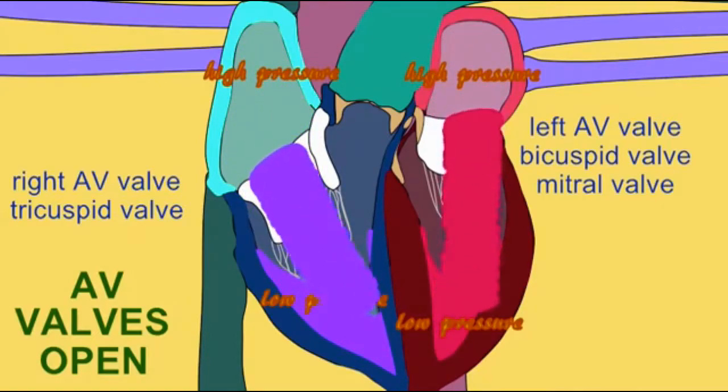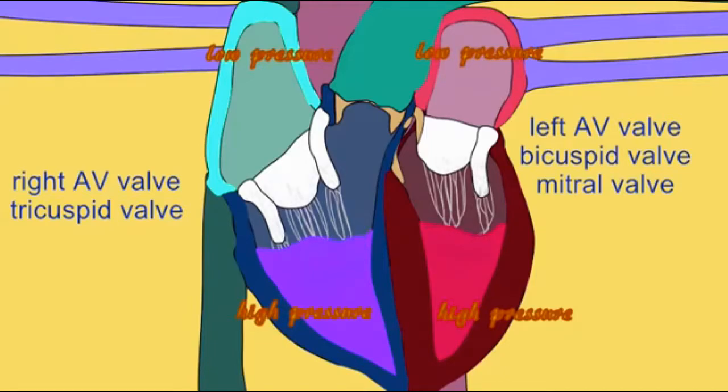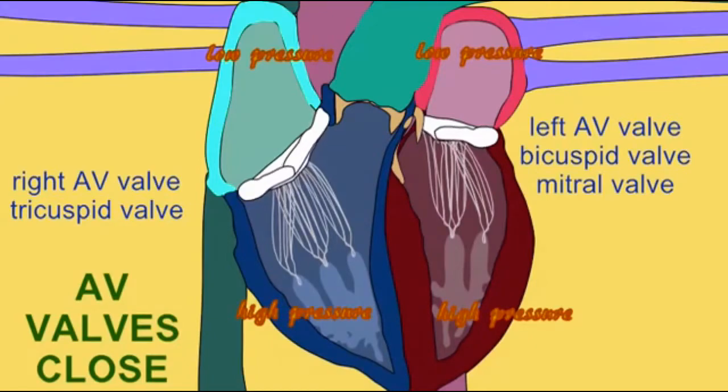But starting in the QRS complex, this muscle begins to contract, and the pressure in the right ventricle is going to increase. And you are going to feel this big push to go to somewhere where there's low pressure.